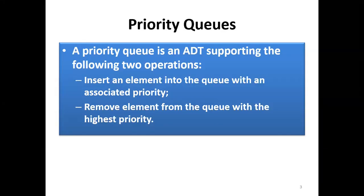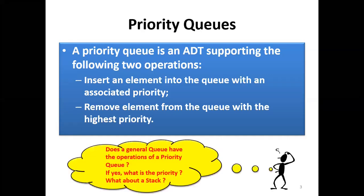Let's start with priority queue. The priority queue is an abstract data type that supports the following operations. For insertion, each element must be associated with a priority. For deletion, the element removed from the queue must have the highest priority. The main difference between the priority queue and a regular queue or stack is that in a priority queue, each element is associated with a certain priority.